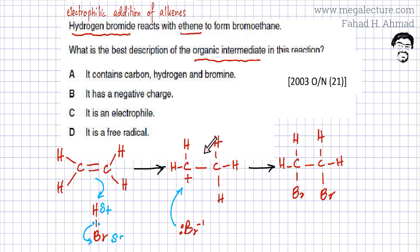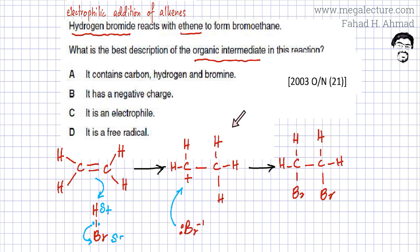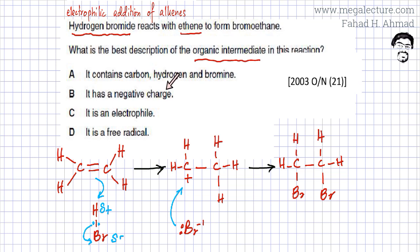This carbocation is the organic intermediate. Option A states it contains carbon, hydrogen, and bromine — as you can see, there is no bromine in the intermediate; bromine comes in the next step, so option A is incorrect. Option B states it has a negative charge, which is also incorrect because it has a positive charge — it's a carbocation.